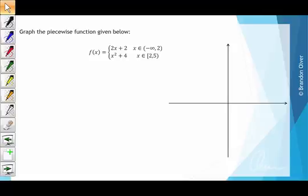In this video, we're going to graph the piecewise function given below. f of x is equal to, the first rule is 2x plus 2, for x is an element of negative infinity to 2 not included, and f of x is equal to x squared plus 4 is the second rule, where x is an element of 2 included through to 5 not included.